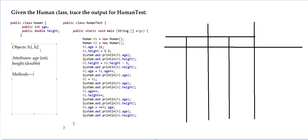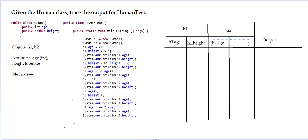Let's get started. Like we did before, we put our object names into our tracing table. h1 goes in one column and h2 goes in another, and output goes here. h1 has two attributes, age and height, so we put h1.age and h1.height. We do the same for h2 since it's also an object of the human class. Now all that's left is to begin tracing our code.